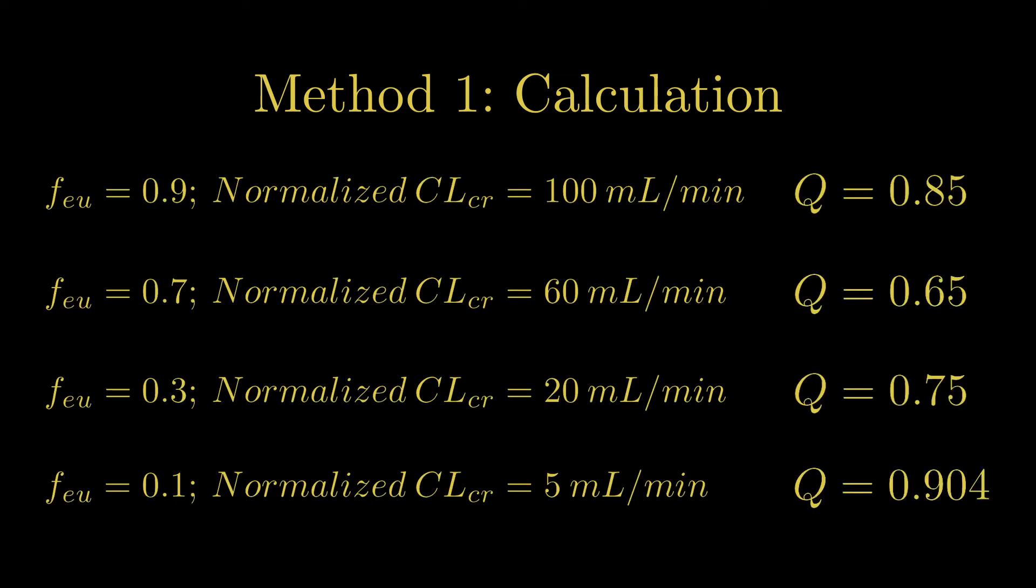If we evaluate the scenarios, we get the following. So our biggest dosage adjustment would be the lowest Q, which is a drug with FEU 0.7 in a patient with 60 milliliters per minute normalized creatinine clearance.